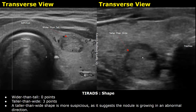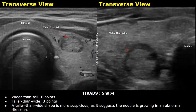In nodules where the height or AP measurement is greater than the width, the shape is taller than wide. This shape is more concerning and associated with malignancy because it indicates the nodule is growing in an abnormal pattern. Taller than wide shape is given three points.